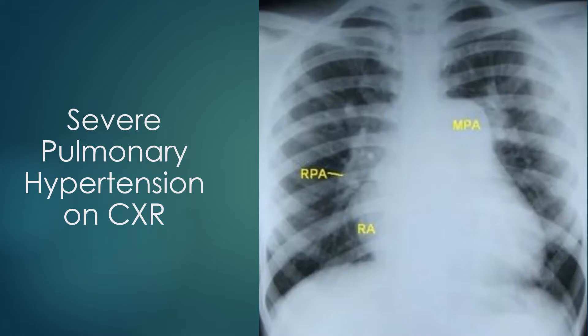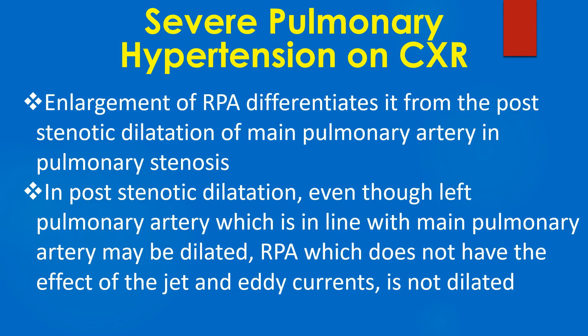The striking feature on this chest X-ray is the remarkably prominent main pulmonary artery segment, which appears to be aneurysmally dilated. The right pulmonary artery is also enlarged. Enlargement of the RPA differentiates this from post-stenotic dilatation of the main pulmonary artery seen in pulmonary stenosis.